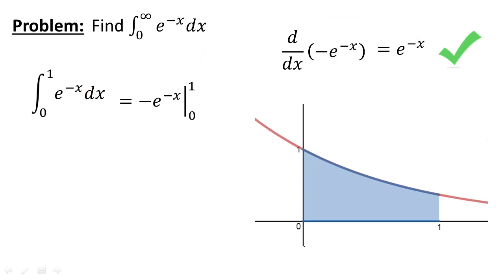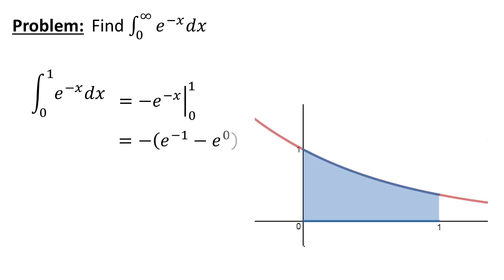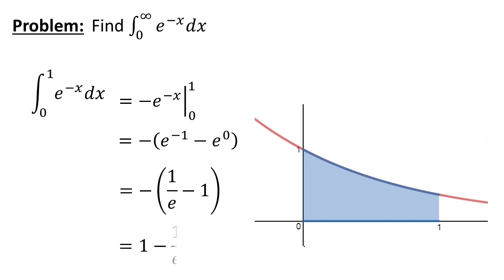So we can go ahead and continue on with our definite integral process. This is going to become negative e to the negative 1 minus e to the 0, which simplifies down to negative the quantity of 1 over e minus 1. If we distribute that negative sign, we're just going to end up with 1 minus 1 over e. And that's going to be our area in blue — so as a warm-up, we know we can calculate this.